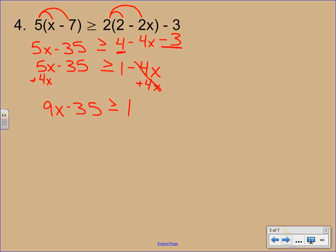That'll give us 9x minus 35 is greater than or equal to 1. And now we've got it back to a two-step. Add 35 to both sides. 9x is greater than or equal to 36. Divide both sides by 9. And we'll have x is greater than or equal to 4. No flipping here because we did not divide by a negative.